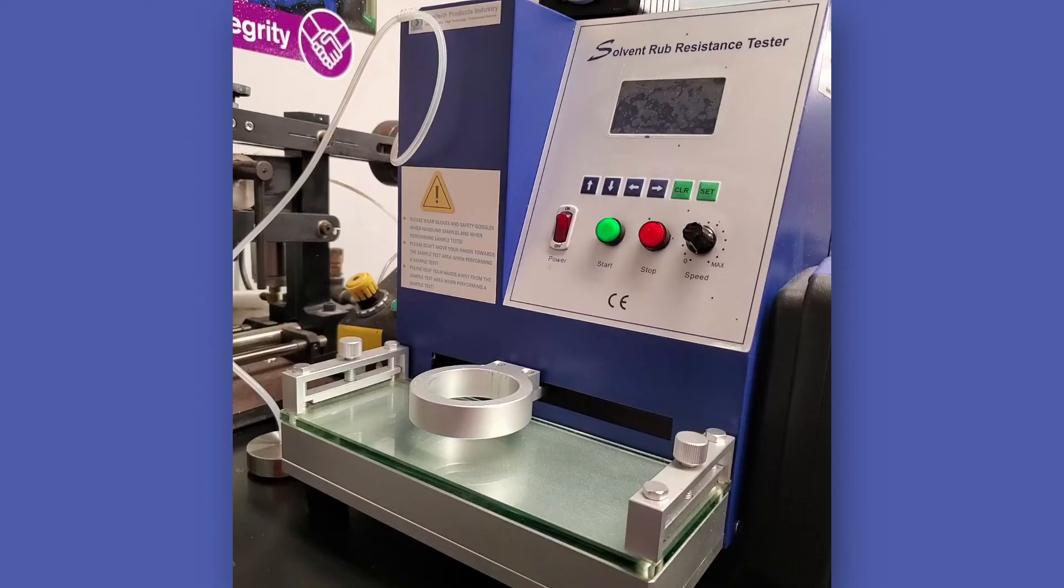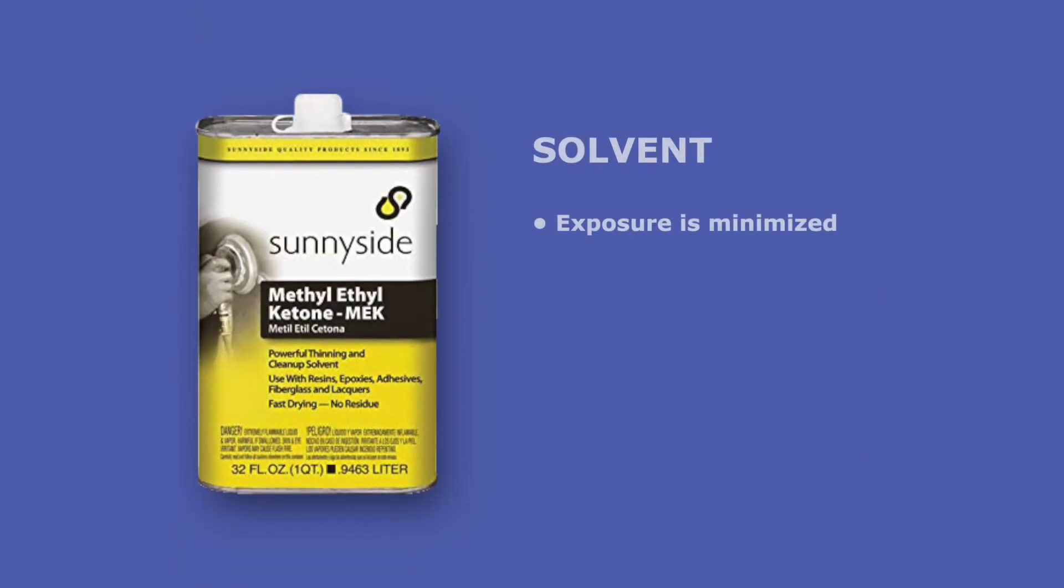The mechanical rubbing machine provides consistent stroke length, rate, pressure, and contact area that are not subject to variables such as human fatigue. Also, exposure to the solvent used is minimized when using a rubbing machine.